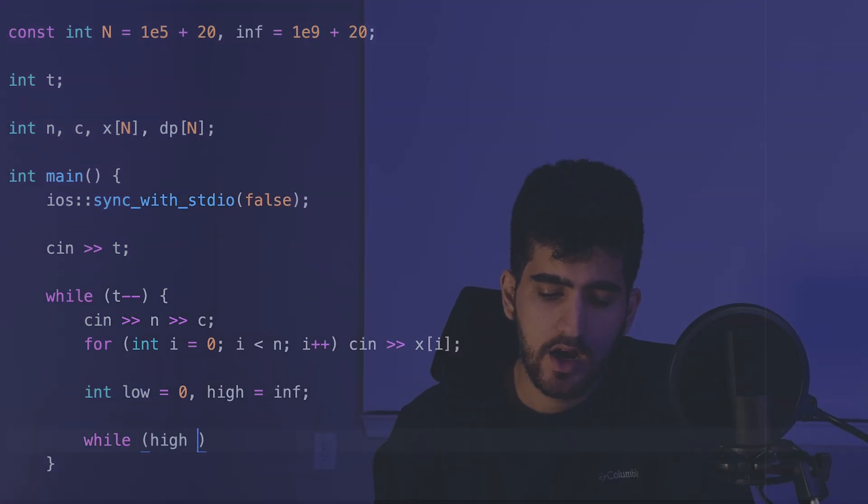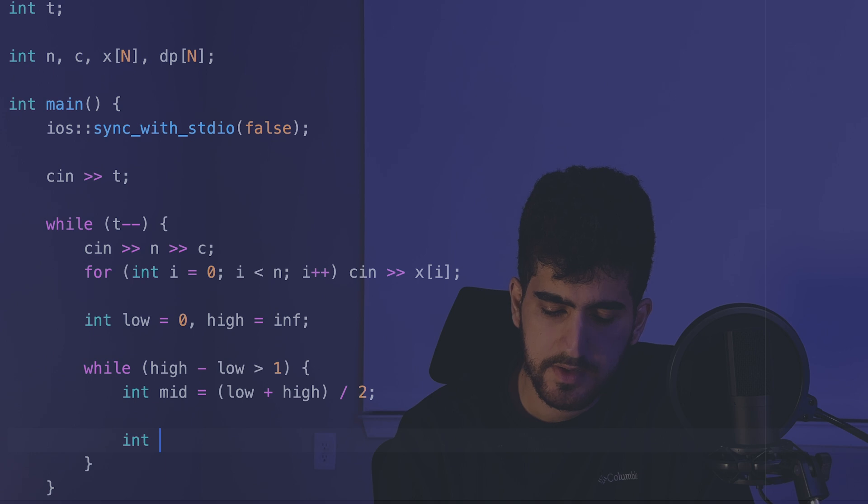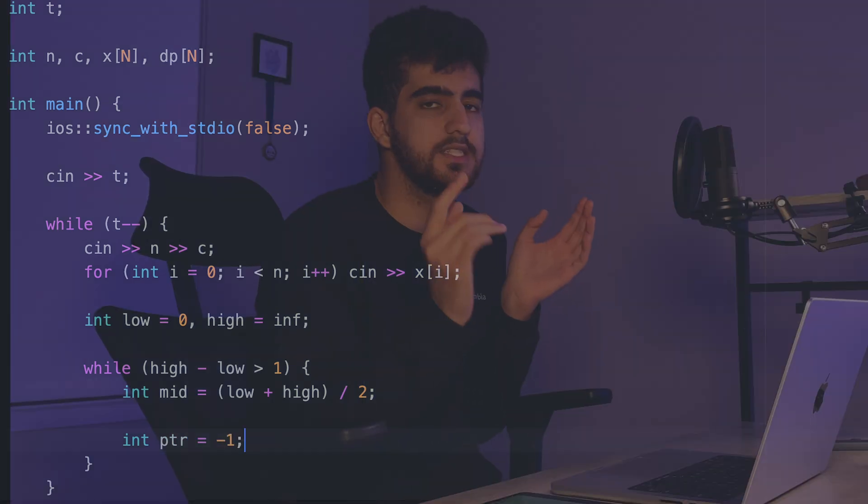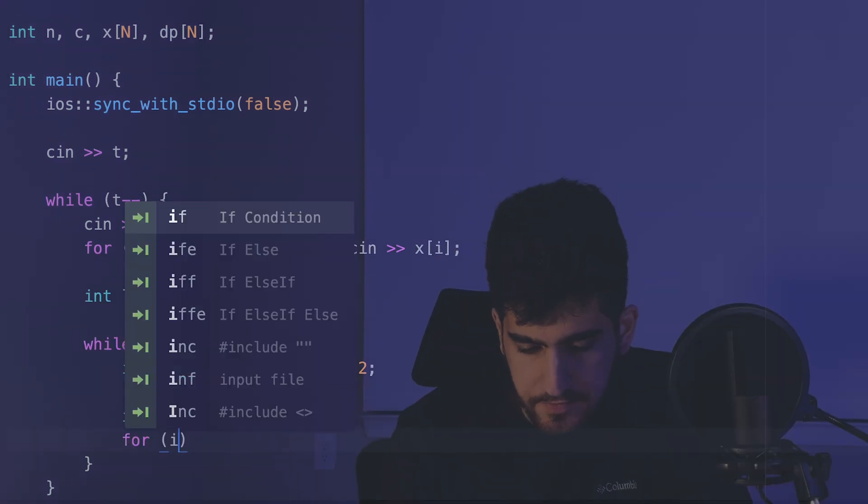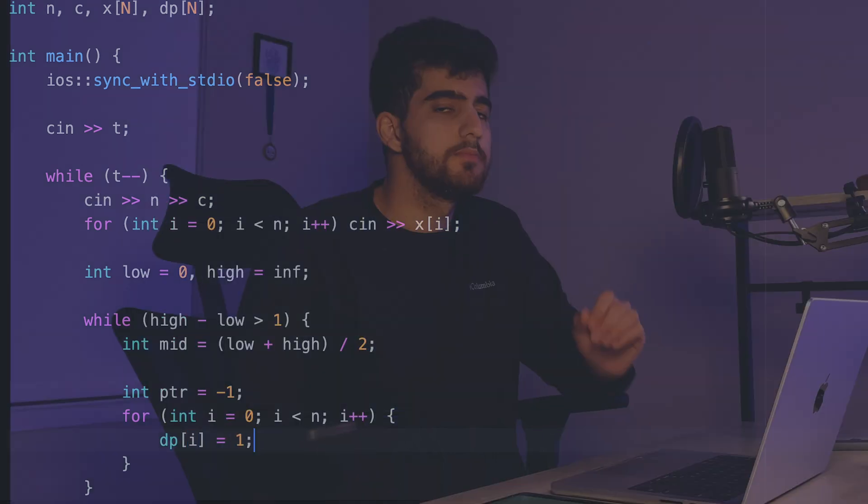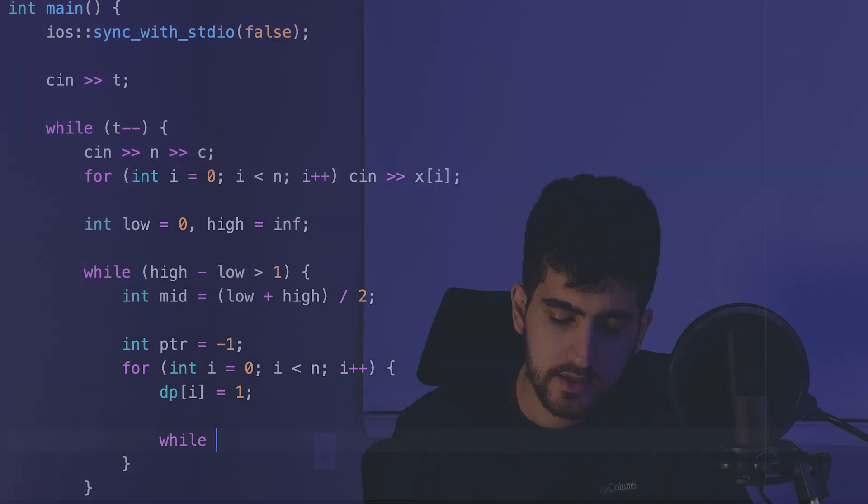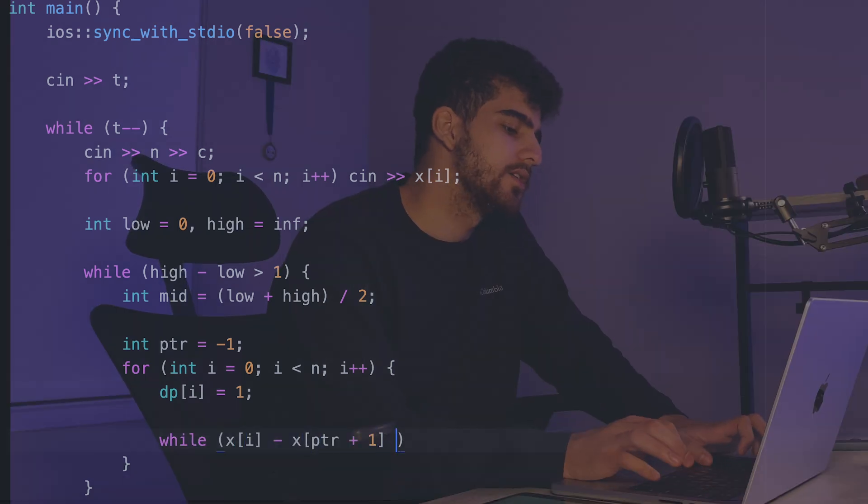I can say while high minus low was greater than 1, int of mid equal to low plus high divided by 2. And then I define my ptr which is the last point, this is my j, the last point that its distance to i is greater than or equal to d. Then I should have a for loop and each time I say that first dp of i is equal to 1 because in the worst case scenario this cow could be chosen alone.